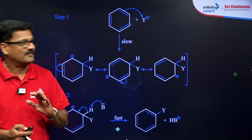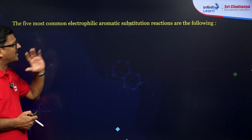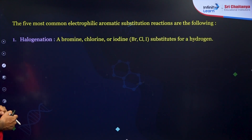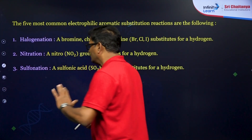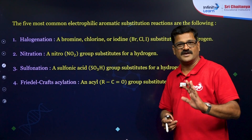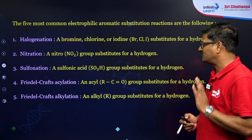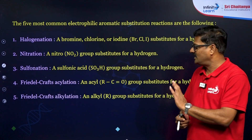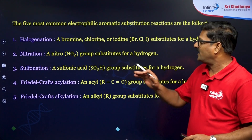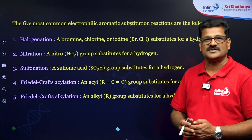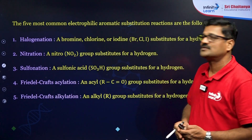There are five most common electrophilic aromatic substitution reactions: first is halogenation, second is nitration, third is sulfonation, fourth is Friedel-Craft reaction, and fifth is Friedel-Craft alkylation and acylation. In halogenation, bromine, chlorine, and iodine are substituted for the hydrogen.